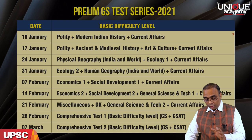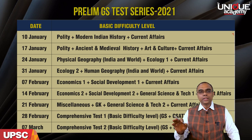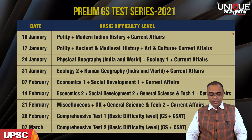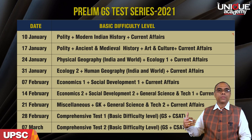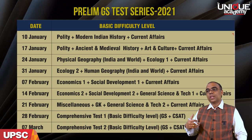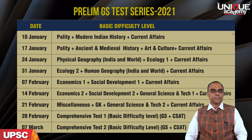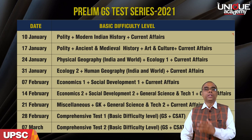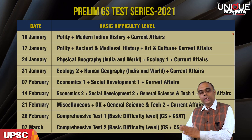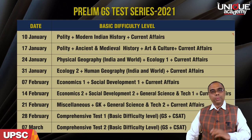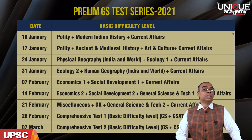On 10th of January we will ask questions on June current events, then on the next test July current events, and in this way we will finish up to December current events by the end of Phase First. In Phase Second we will cover current events from January to May, plus revision of the previous months' current events.